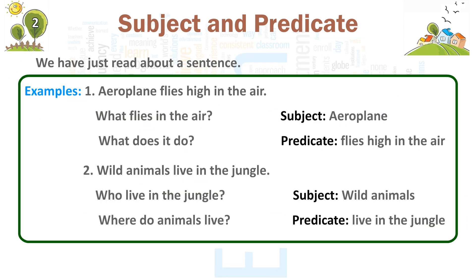Example 1: Aeroplane flies high in the air. What flies in the air? Subject — Aeroplane. What does it do? Predicate — Flies high in the air.